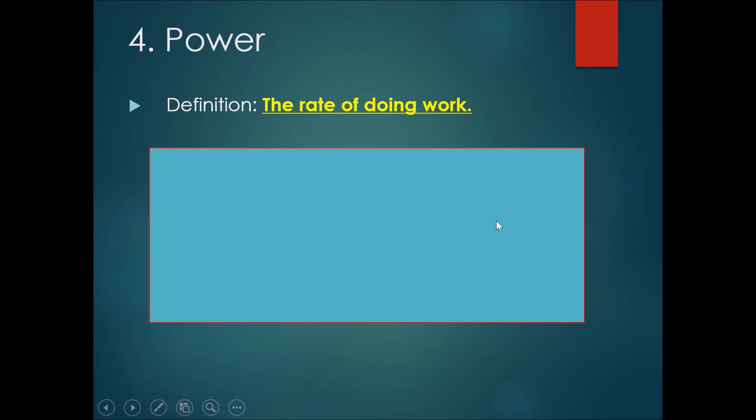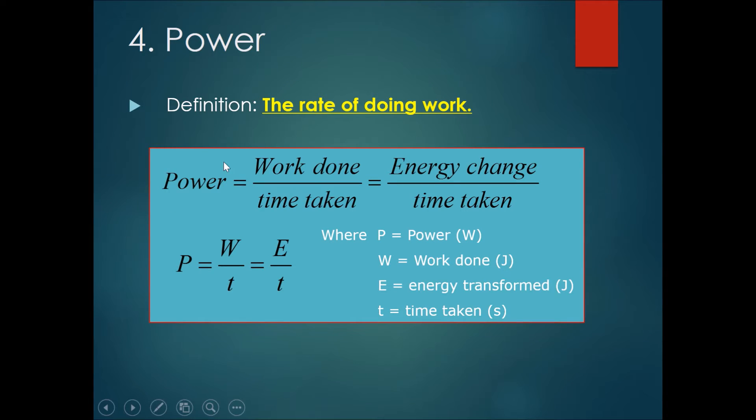Lastly, let's talk about power. The definition of power is the rate of doing work. Power is the work that you have done divided by the time taken, or the energy change in an object divided by the time taken to effect the energy change. You can summarize the formula as P equals W over t.